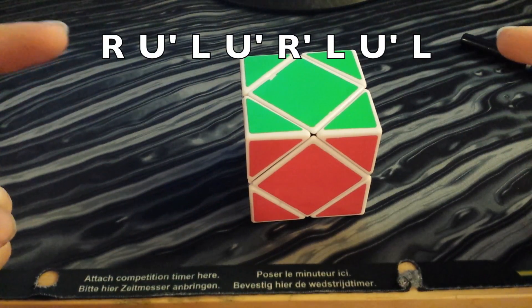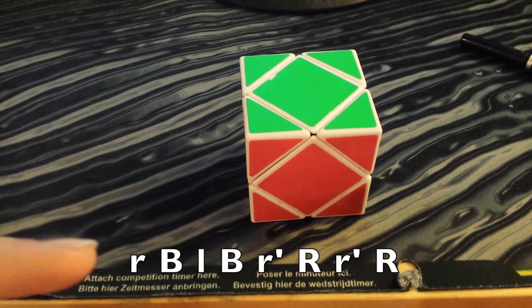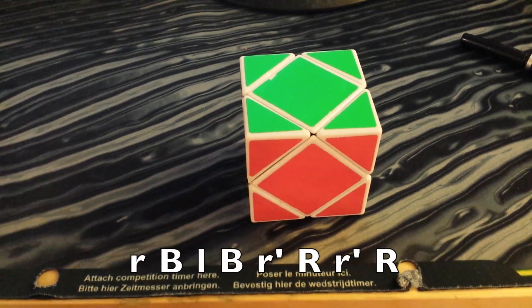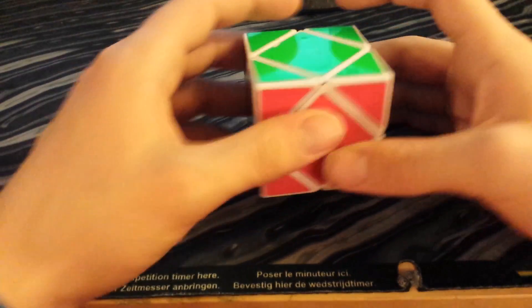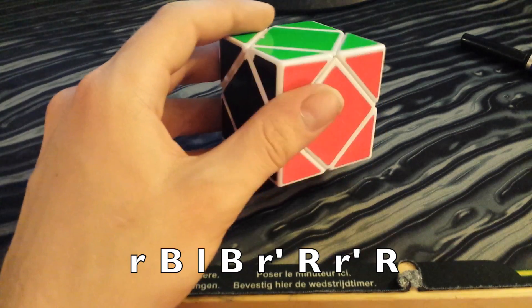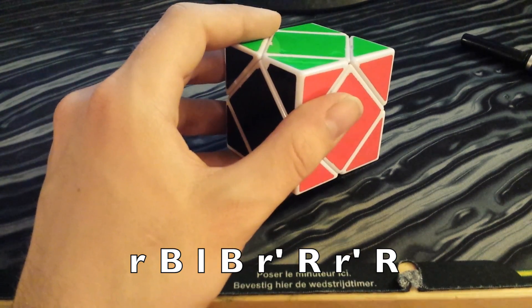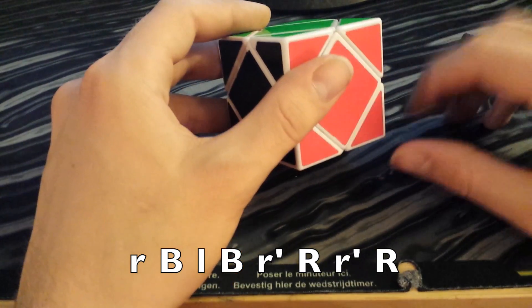On the top here, I have the fixed corner notation version of this algorithm, and on the bottom I have the Rubik's Cube version. I'm going to put the Rubik's Cube version up because I think this goes in line more with how I turn it rather than the fixed corner notation.